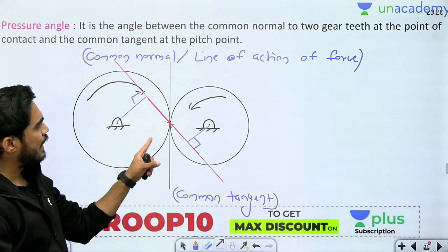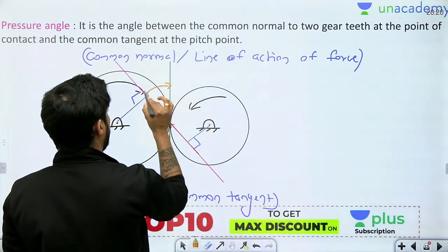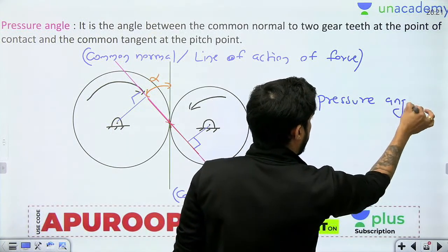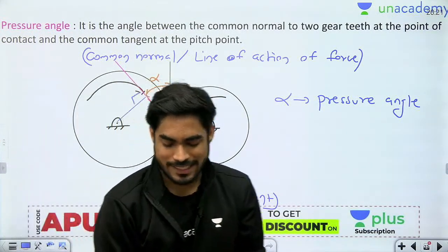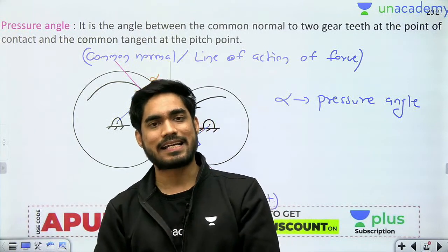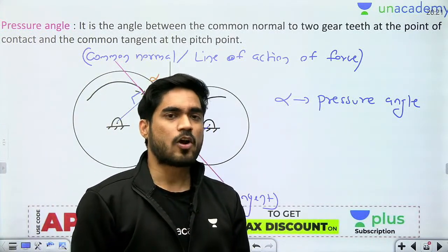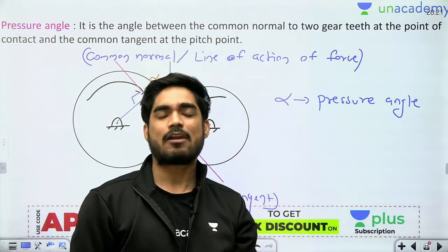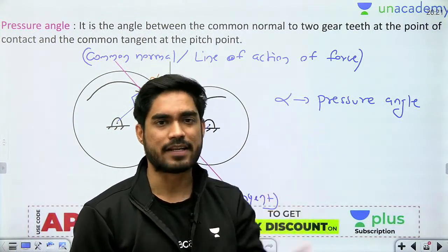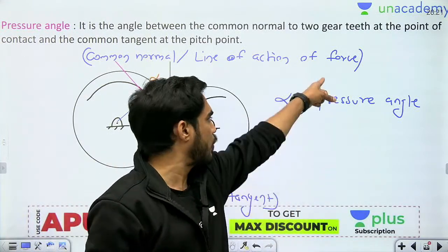The angle between the common normal and the common tangent at the pitch point is the pressure angle α. This is very important because all parameters of the gear are related through this pressure angle. When designing a gear, we only calculate one parameter — the module — and then use the pressure angle to find other parameters from standard tables. The standard values of pressure angle are 20 degrees and 25 degrees. Earlier 14.5 degrees was used but is no longer standard today.